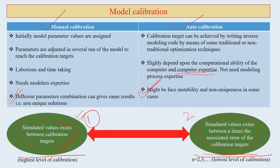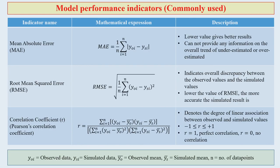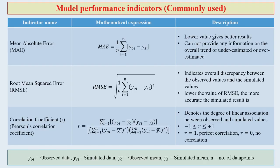We must know the performance of various indicators in our model, since each indicator can impact the model process and outcome. One indicator is Mean Absolute Error (MAE). Lower values of MAE give better results. However, MAE cannot provide any information on the overall trend of underestimated or overestimated values.